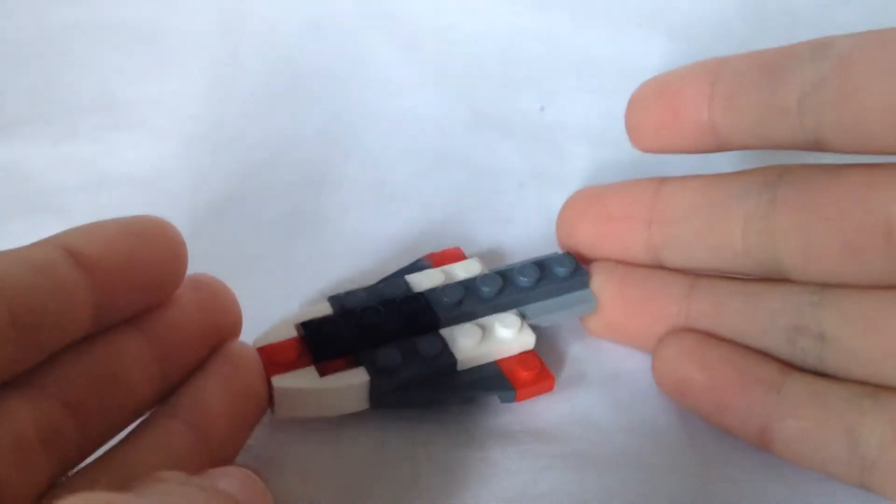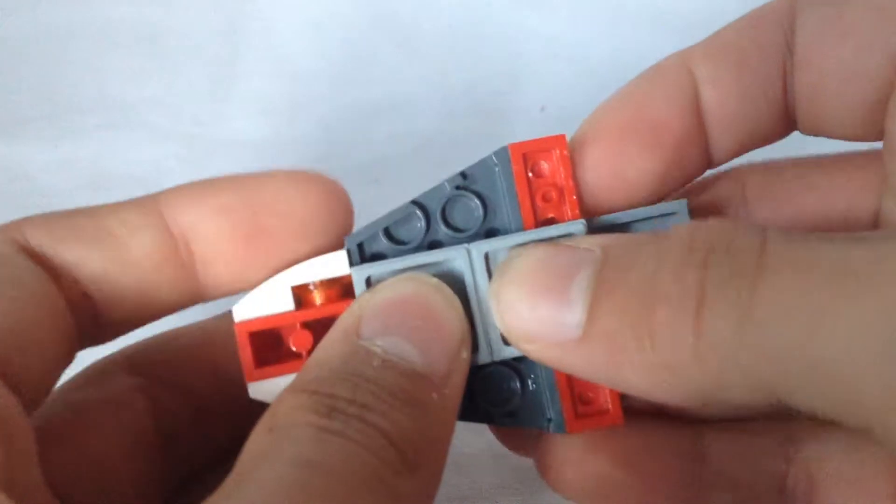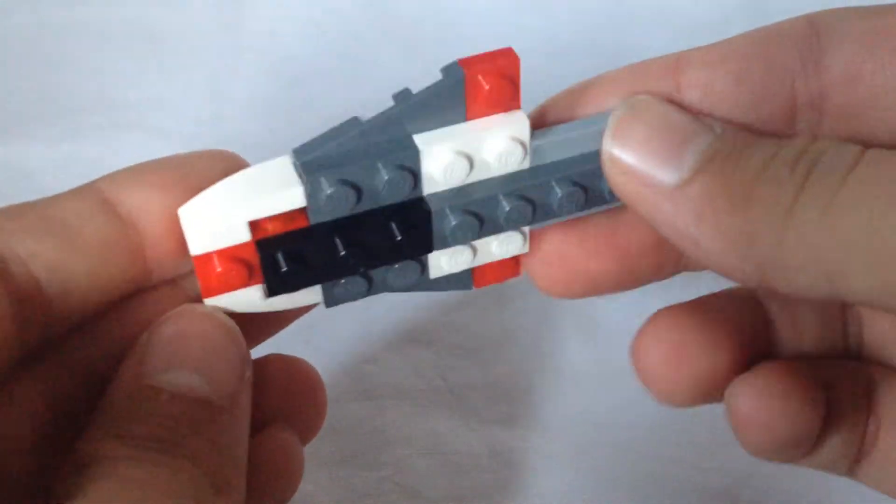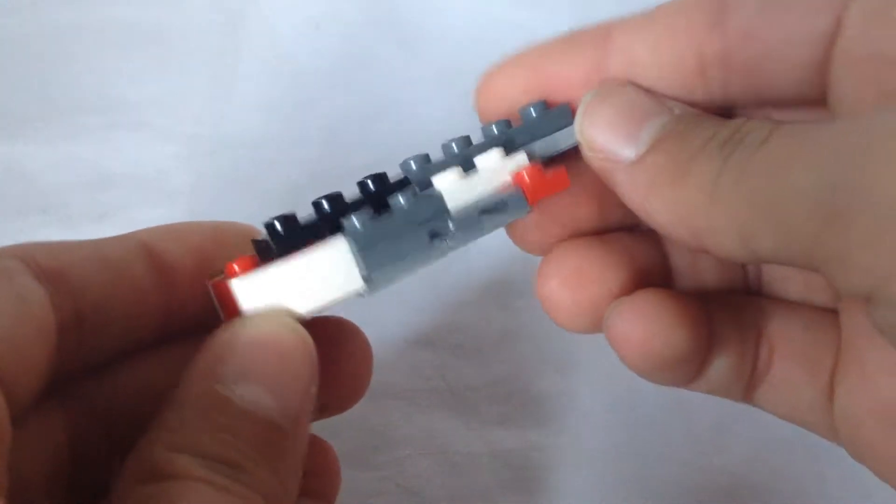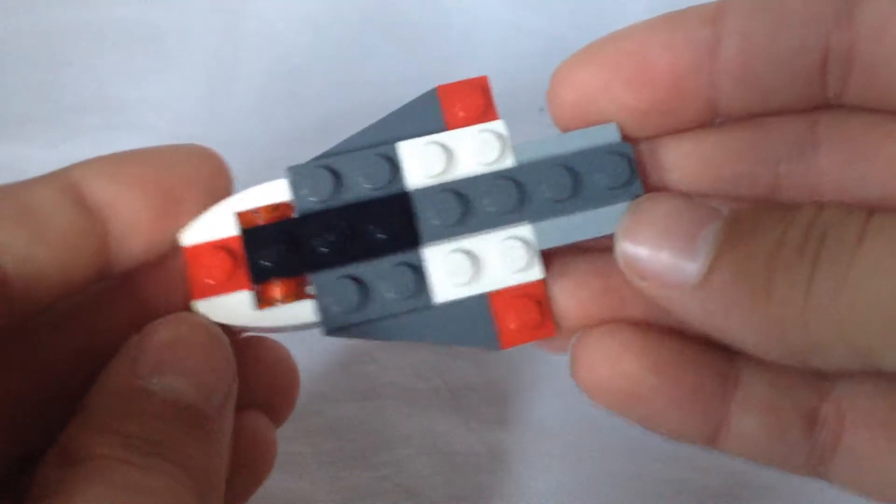Today we are going to be making a mini Lego Mon Calamari Liberty Type or variant of the MC-80 Starship Type built by the Mon Calamari on the planet of Mon Calamari.